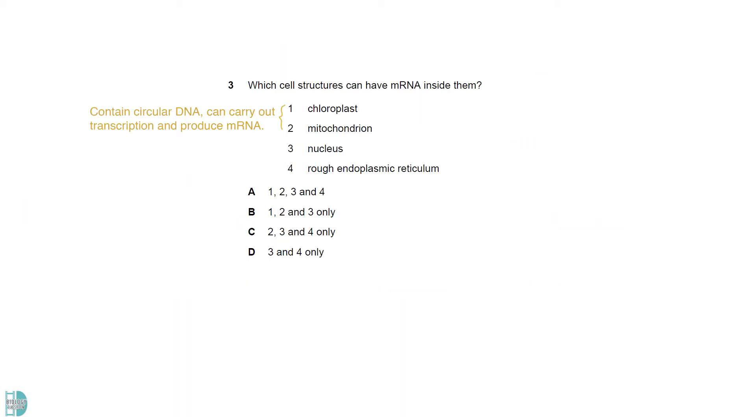Chloroplasts and mitochondrion contain circular DNA. They can carry out transcription and produce mRNA. The nucleus contains linear DNA and is the site of transcription. Rough ER uses mRNA for translation, but it attaches to the ribosomes on the outside. So, mRNA is not found inside the organelle.